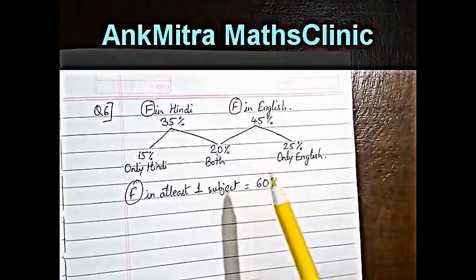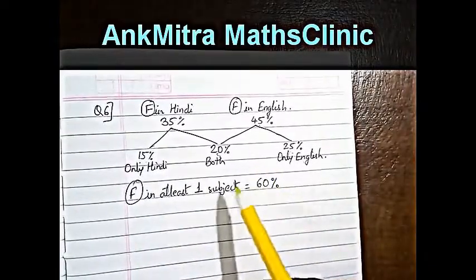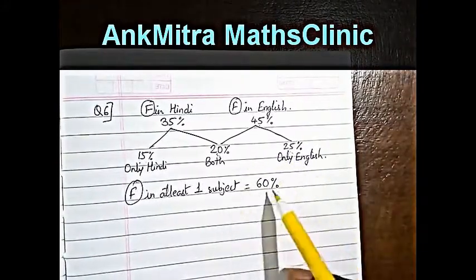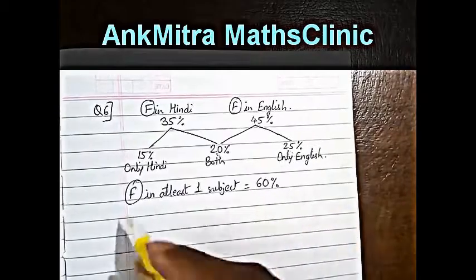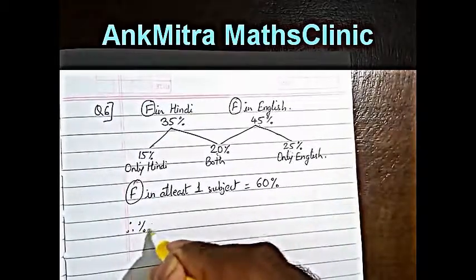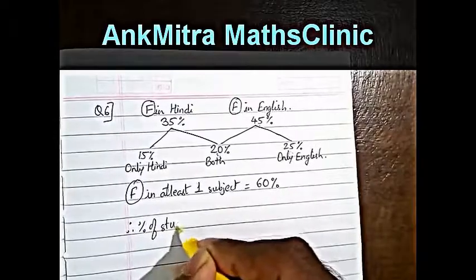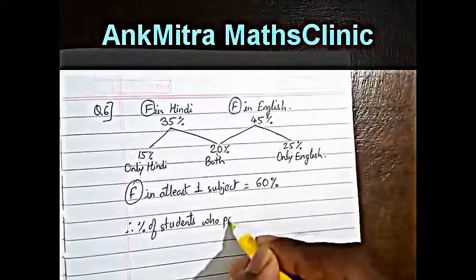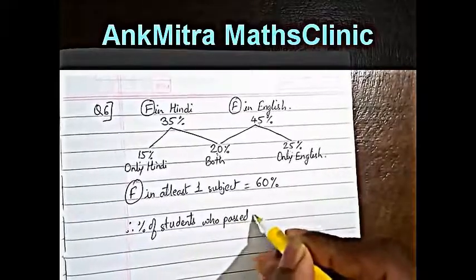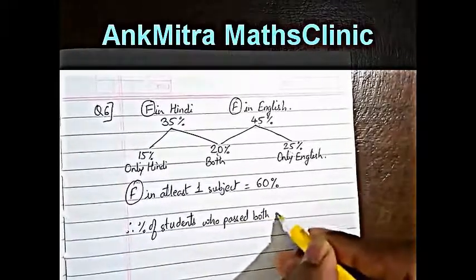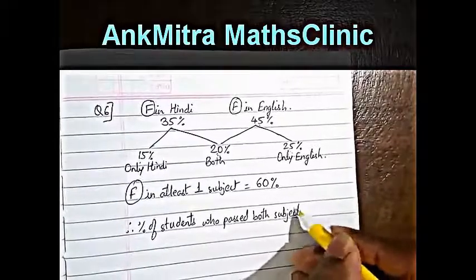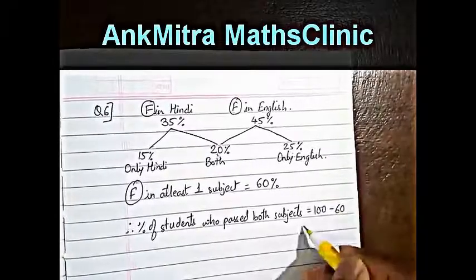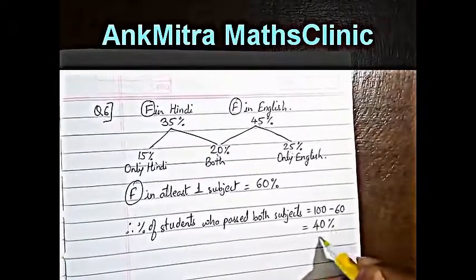So if 60% of the students have failed in at least one subject, then the percentage of students which have passed in both the subjects will be 100 minus 60, that is 40%. Therefore, the percentage of students who passed in both subjects will be 100 minus 60, which is equal to 40%.